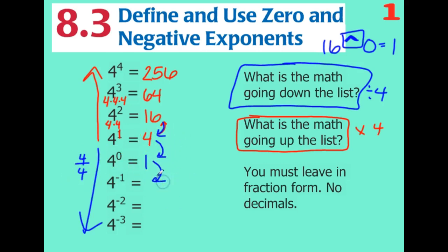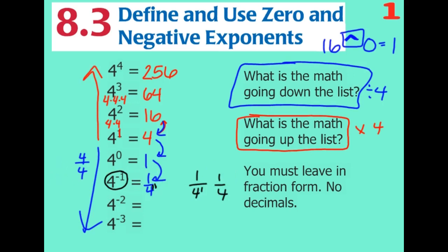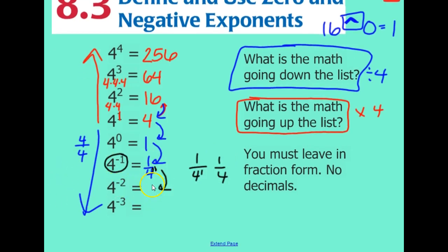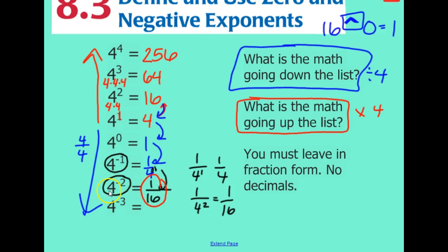If I continue down, dividing by four again, we have one divided by four, which is four to the power of negative one. All we're doing is moving this to the bottom of the fraction and making the exponent positive. We normally just write four, but one over four to the power of one is still just one over four. Then dividing by four again — it's really dividing by four two times — which is one over sixteen, because four squared is sixteen, and it's in the denominator.